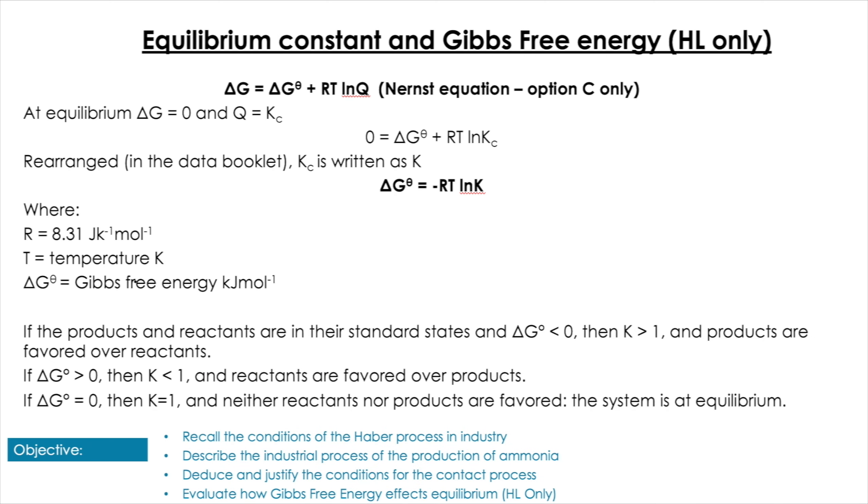And lastly, we want to have a look at the equilibrium constant and its relationship to Gibbs free energy. We're not going to cover in this the Nernst equation, which you would cover in Option C. But we said when we did Unit 5 that ΔG, when it's equal to zero, is at equilibrium. And we know that Q is equal to Kc at equilibrium. So if we take the Nernst equation and we just plug in those values for our equilibrium, then we end up with this second expression. And that gets rearranged and given to us in the data booklet as this: ΔG° = -RT ln K.